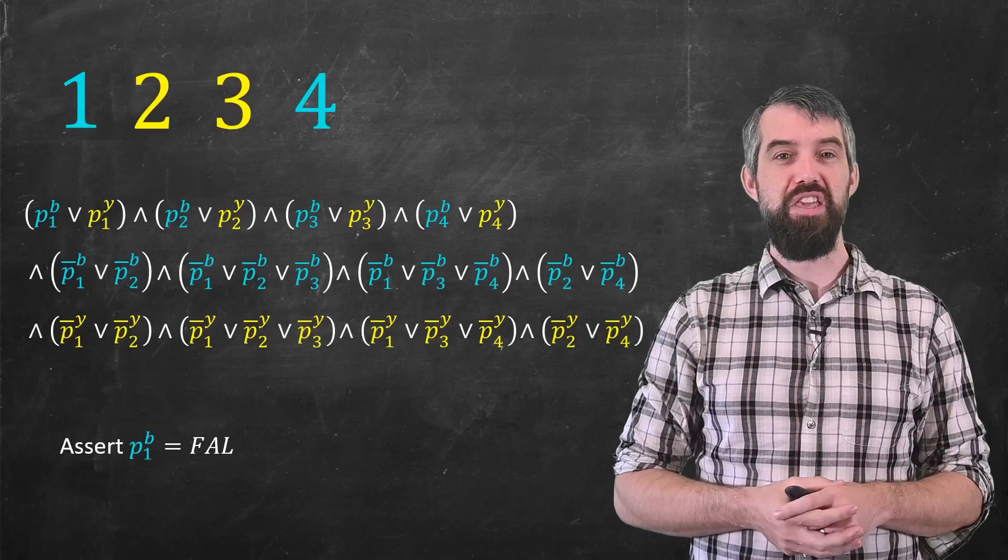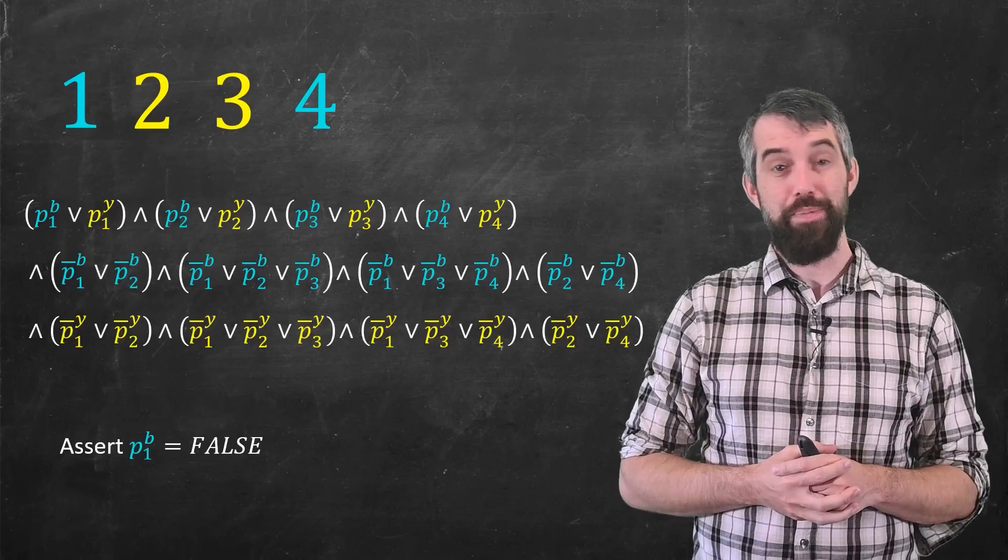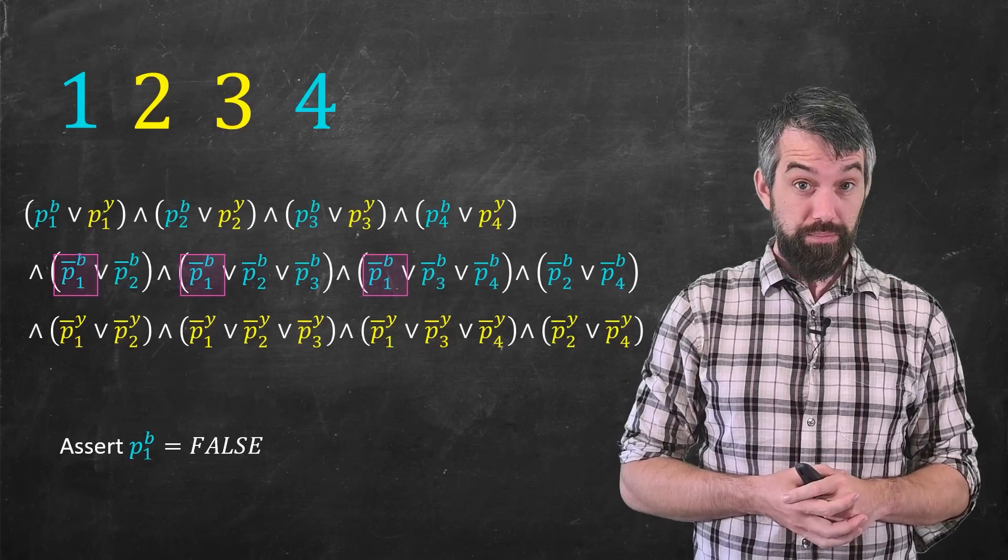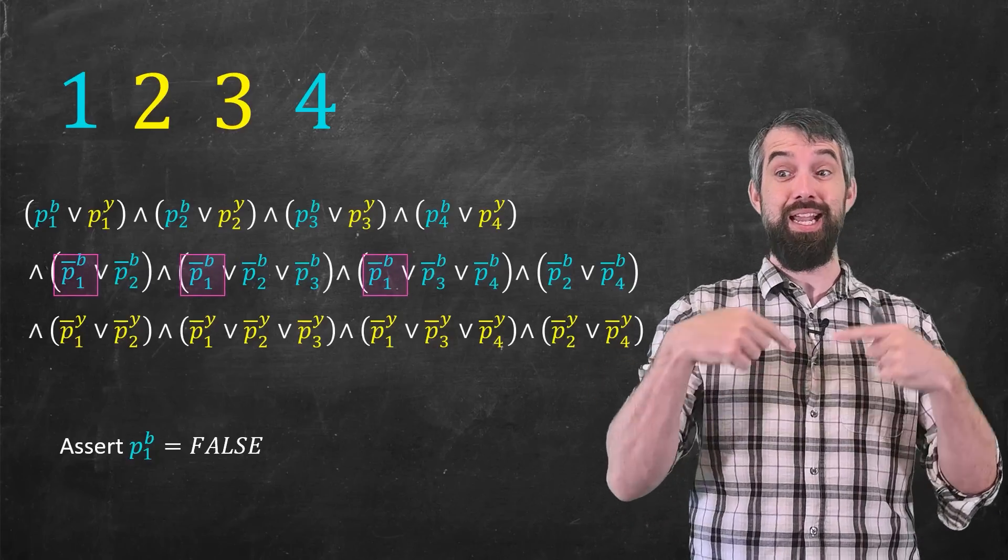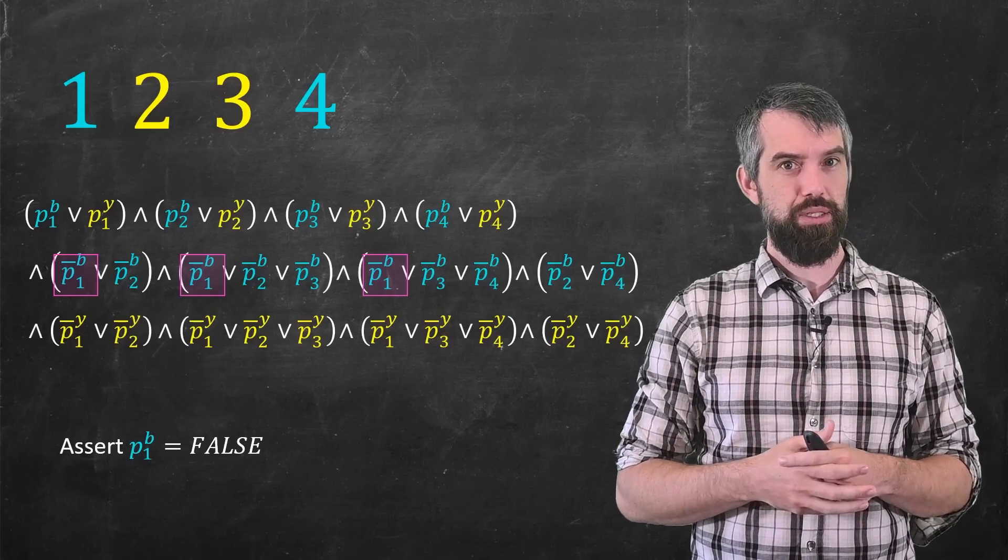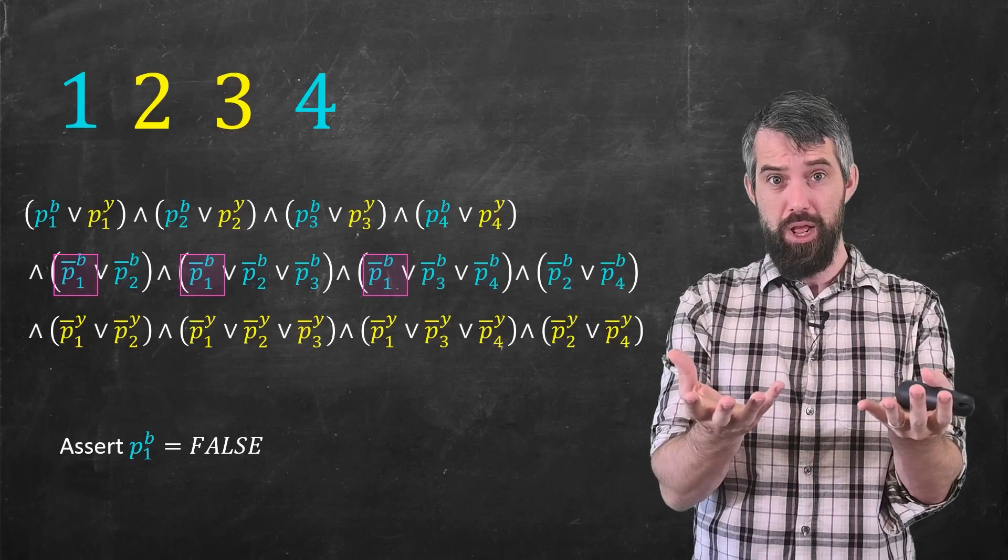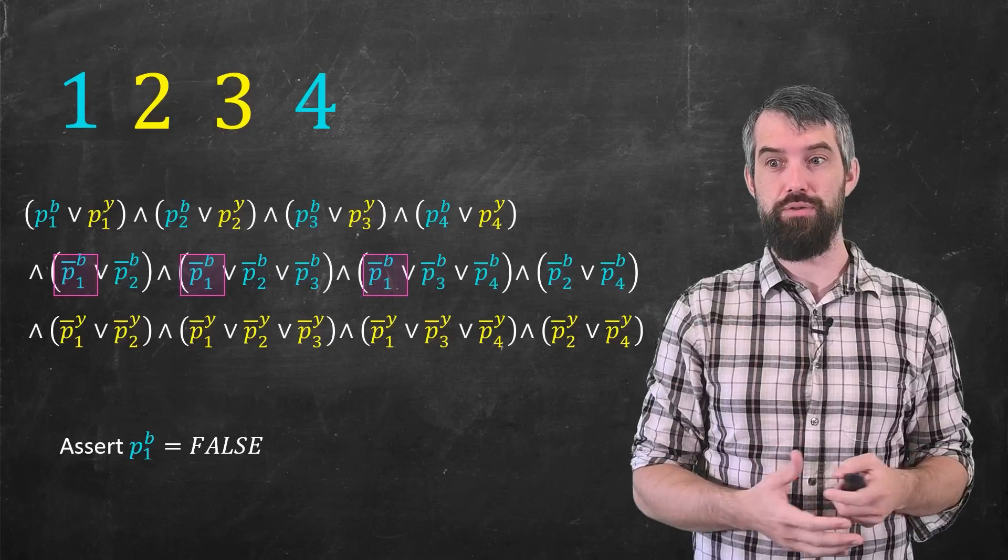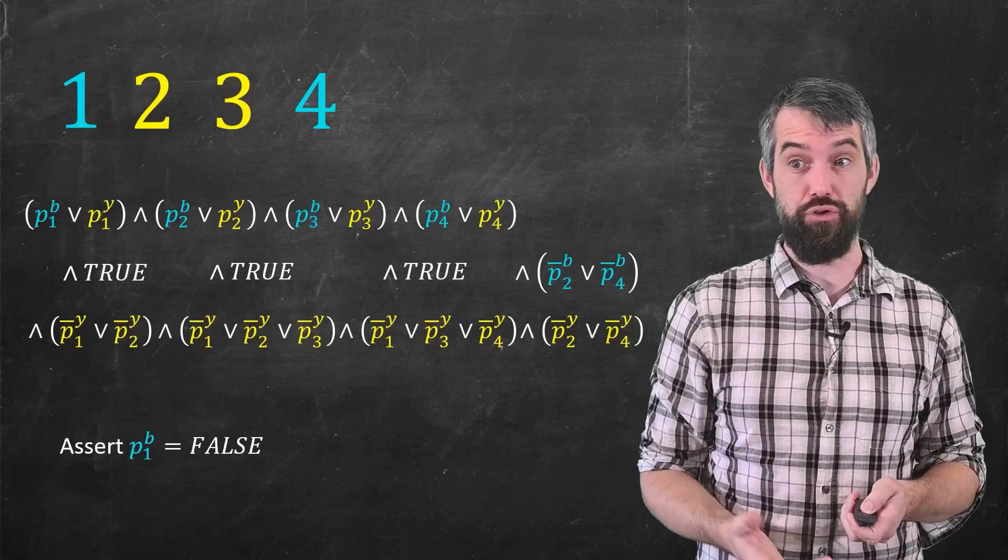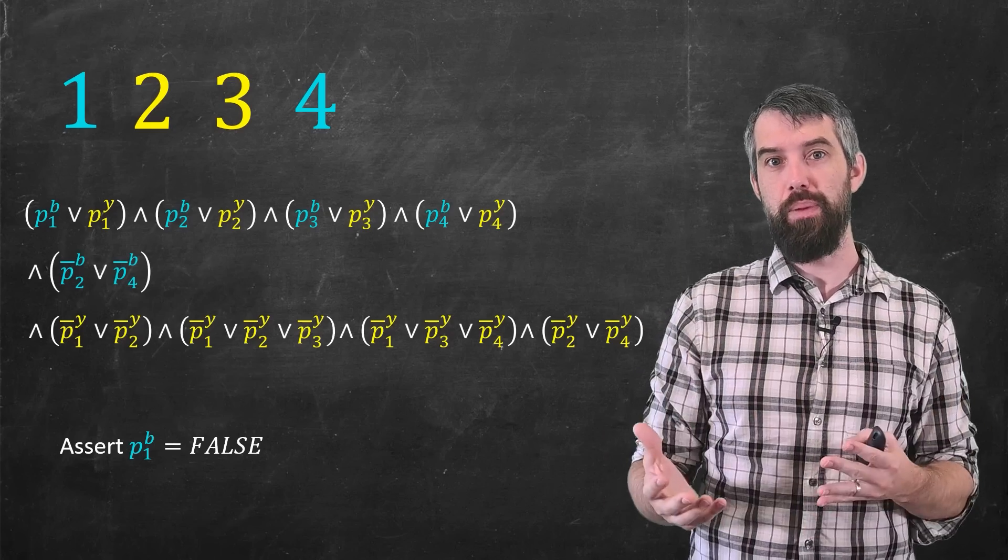Let me just assert for you that the first variable, p_1^b, is false. Now, if I just assert this problem, I'll notice that it appears a few different places. So if p_1^b is false, then the negation of p_1^b is true. So in these three locations, that's going to evaluate to true. And if you have true or another variable, those whole clauses evaluate out to true. And in fact, if those things are true, you have a bunch of and statements of trues, you can just get rid of them. You can clean this up and get the smaller, shorter problem.